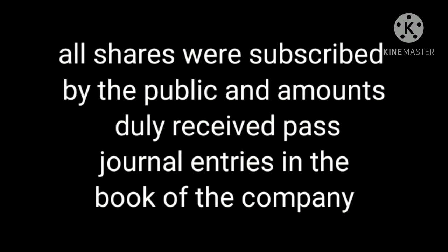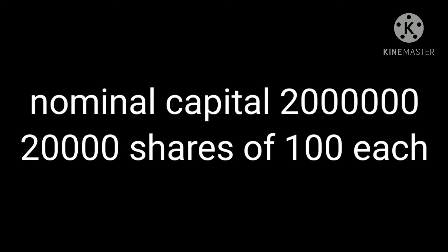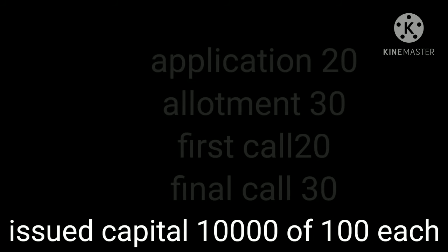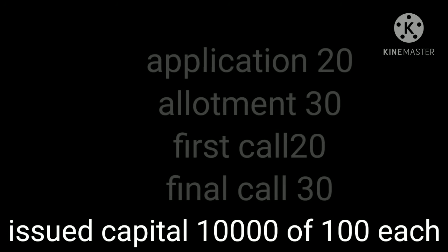In this question, the nominal capital of Hindustan Limited is 20 lakh, divided into 20,000 shares of rupees 100 each. So the number of shares is 20,000 and price of one share is 100. The company issued 10,000 shares at par, so total issued capital is 10,000 into 100, which equals 10 lakh. Here, shares are issued at par.